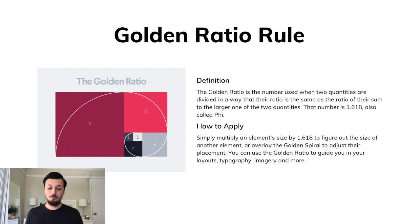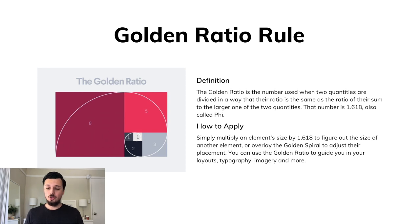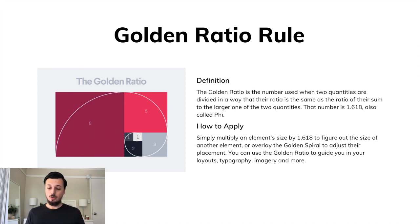Now let's talk about the golden ratio. The golden ratio is the number used when two quantities are divided in a way that their ratio is the same as the ratio of the sum to the larger of the two quantities. That number is 1.618, also known as phi. To apply it, simply multiply an element's size by 1.618 to figure out the size of another element, or overlay the golden spiral to adjust placement.